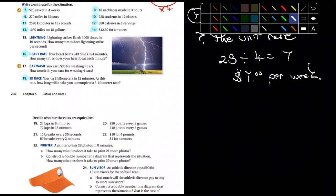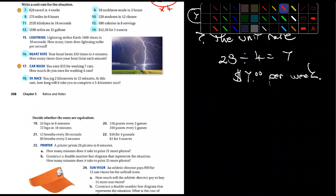Questions on any of those? Number 16, your heart beats 240 times in four minutes. How many times does your heart beat each minute? Well, you should be able to figure that out by now. Number 18, you jog two kilometers in 12 minutes. At this rate, how long will it take you to complete a five-kilometer race?